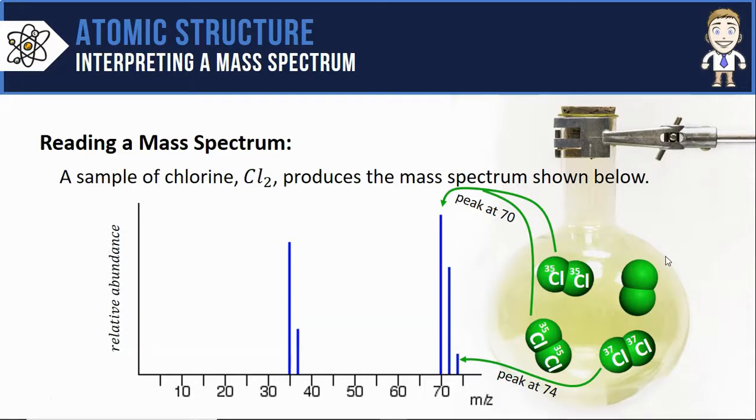The only other possible makeup for my Cl2 molecules is a chlorine-35 bonded to a chlorine-37. These Cl2s will have a total mass of 72, thus the peak we see here at 72.